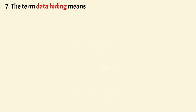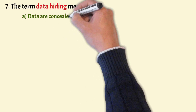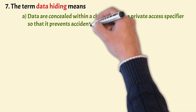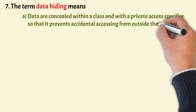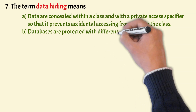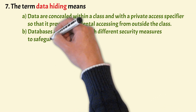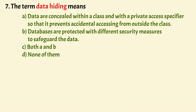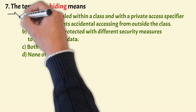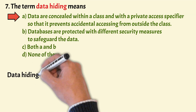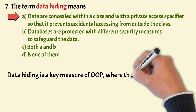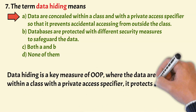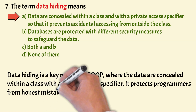The next question is about data hiding. The options are: data are concealed within a class with a private access specifier so that it prevents accidental accessing from outside the class; databases are protected with different security measures; both A and B; and none of them. The correct answer is option A. Data hiding is a key measure of OOP concepts where data are concealed within a class with a private access specifier, and it protects programmers from honest mistakes.